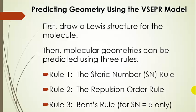How do we predict geometry using the VSEPR model? It's always going to start by drawing a Lewis structure — you want to draw the best Lewis structure for the molecule. Then you're going to predict the molecular geometry based on three rules. The first rule, which we'll focus on in this presentation, is the steric number rule. The second rule is the repulsion order rule, which has to do with different types of electrons — whether they're lone pairs or bonding electrons. And finally, a simplified version of Bent's rule, which is for steric number five.